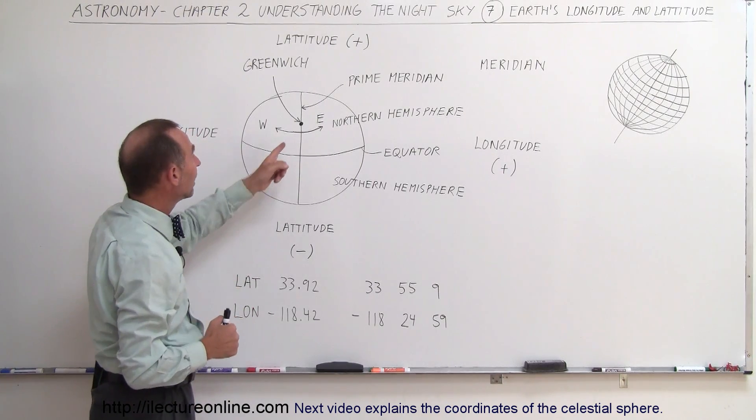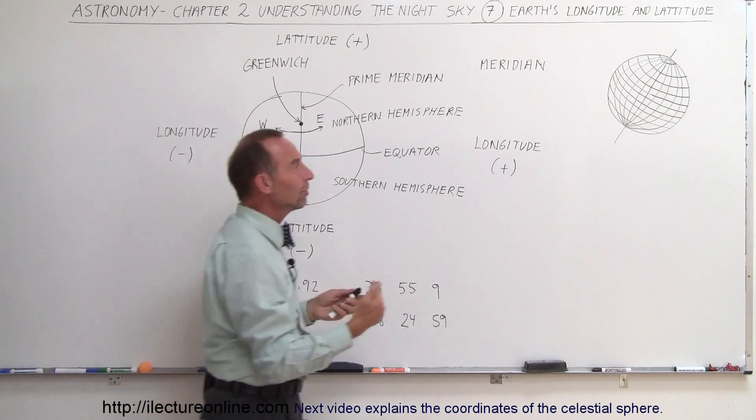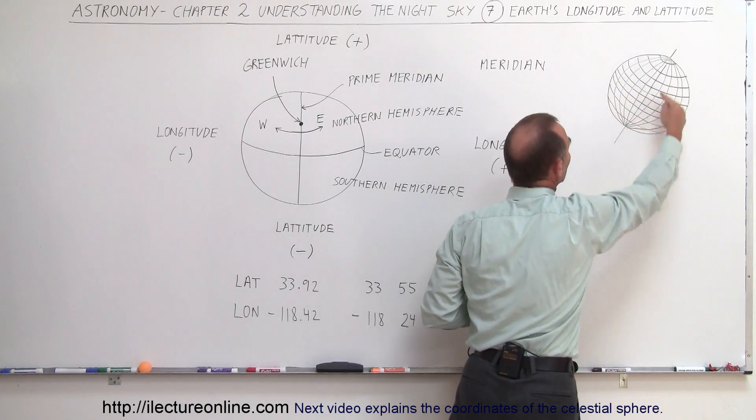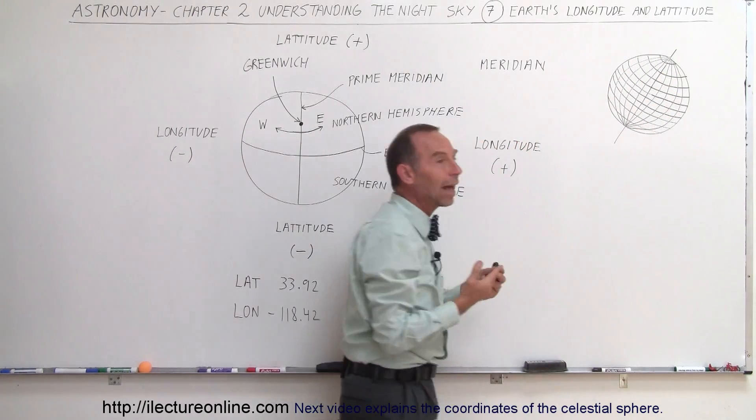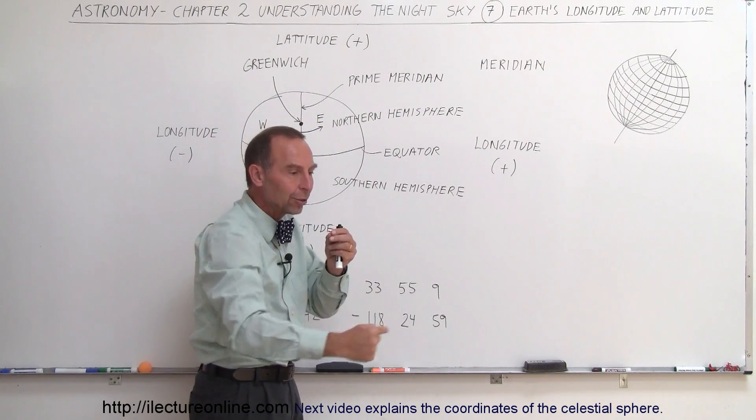The meridian that goes through Greenwich is called the prime meridian. You can also think of these other imaginary lines that have been drawn on the Earth as meridian lines that go through the North Pole, the South Pole, and around the Earth like that.